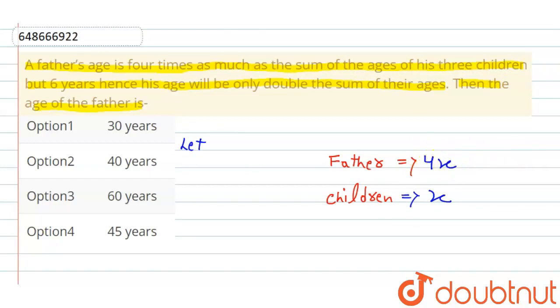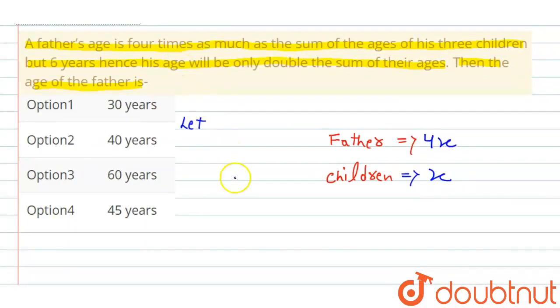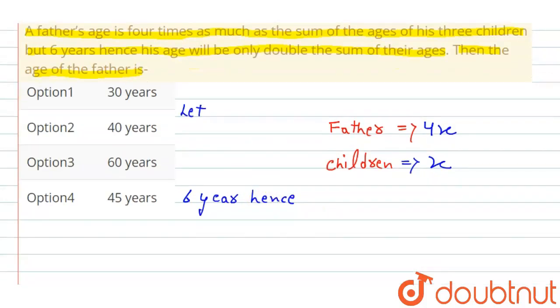The question says six years hence, which means 6 years in the future. After 6 years, the father's age will become 4x plus 6, since his present age is 4x and 6 years will be added.